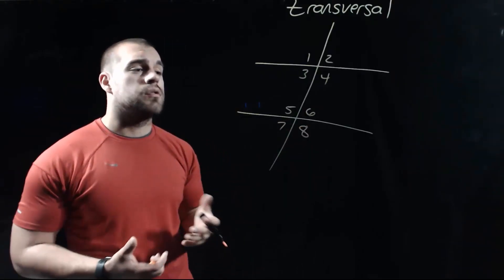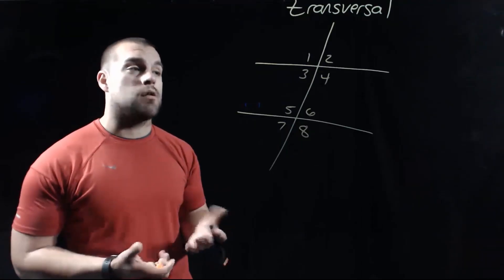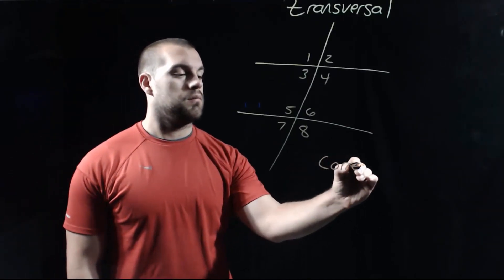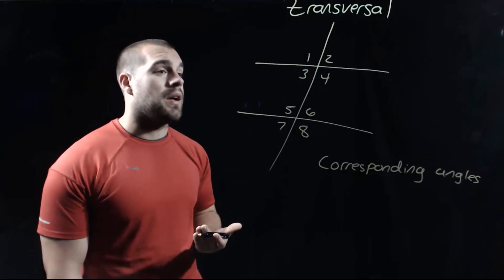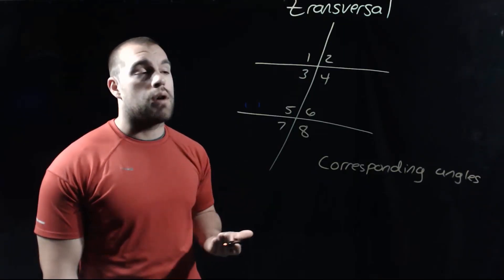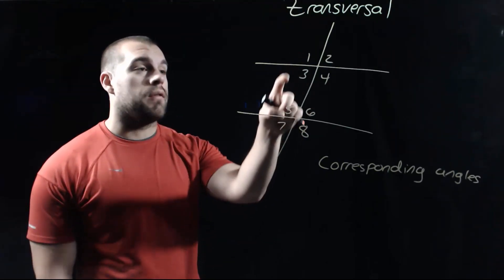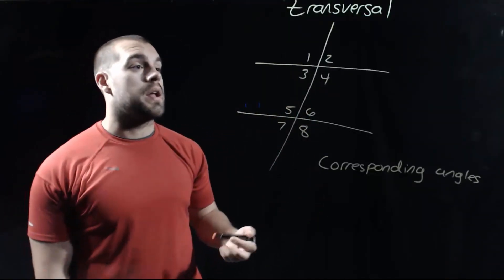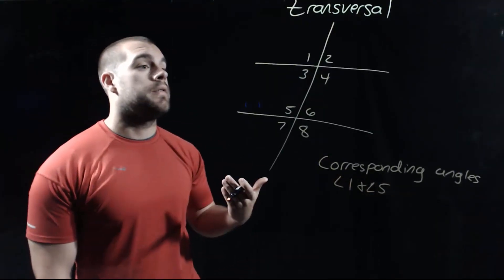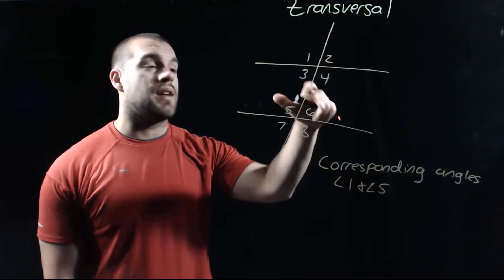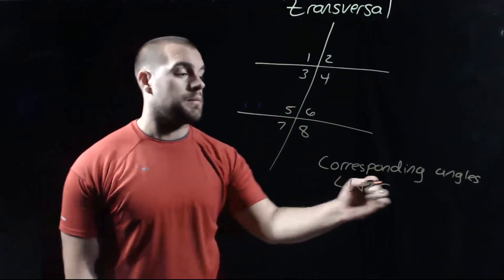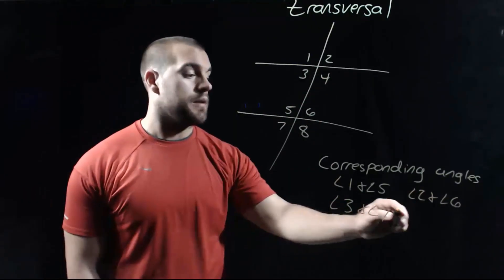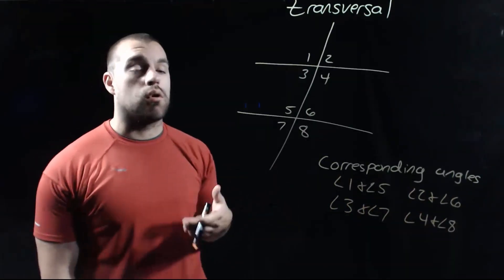Along with those eight different angles that are created, there are some different kinds of angle pairs. The first kind are called corresponding angles — these are angles that are in the same position within their angle groups. So if we looked at angle one and angle five, within their angle groups they're each on the top left-hand corner, so we would say those are corresponding. Two and six are each in the top right of their angle groups, so those are corresponding. Same thing with three and seven, and also with angle four and angle eight. All four of those are called corresponding angle pairs.